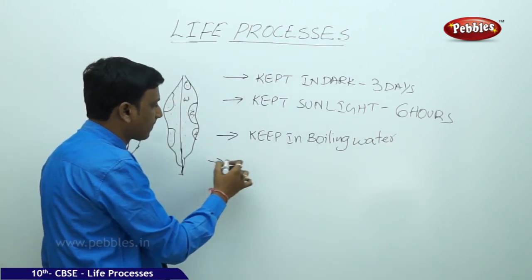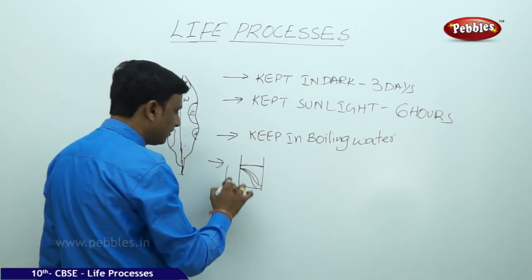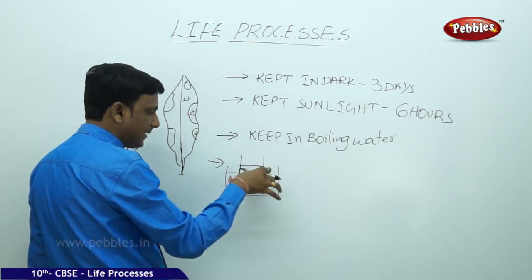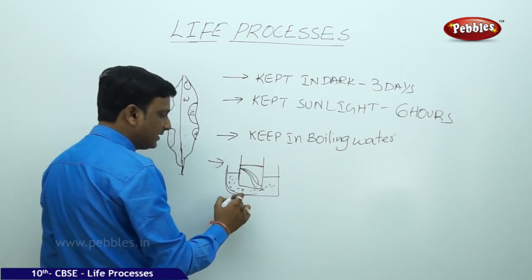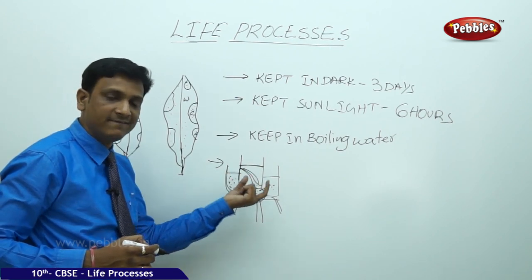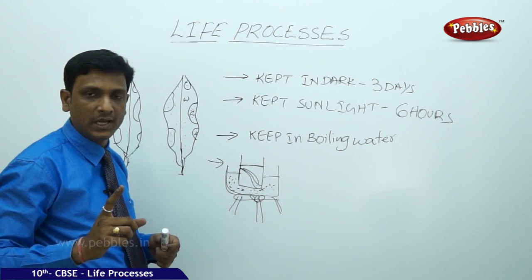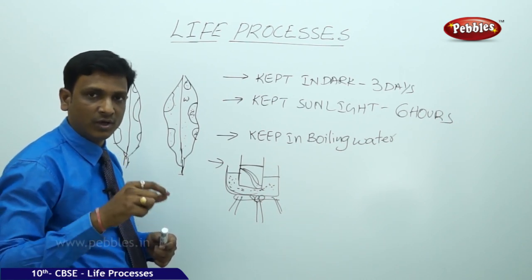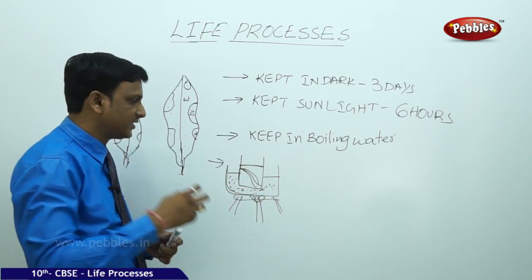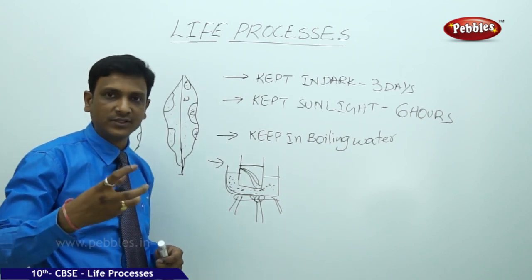After boiling in water, we place the leaf in a beaker of alcohol. This beaker is then kept in a water bath — a tub with water — and the whole setup is placed over a burner. We cannot boil alcohol directly on a flame because alcohol is highly inflammable and there is a risk of fire. By using the water bath, heat is supplied to the alcohol indirectly. The alcohol starts to boil, and the leaf begins losing its color into the alcohol, turning it green.